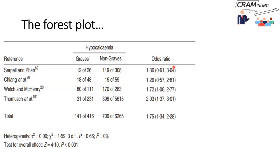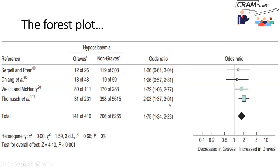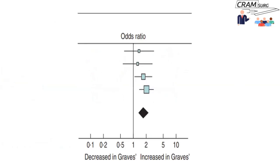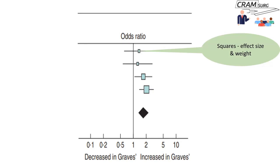You have the results for the primary outcome for each study in the different groups laid out side by side. In Graves patients you have the number with hypocalcemia; in the non-Graves cohort, the same. You list the results for the primary outcome in all four studies one below the other, then look at the effect size. In this case the effect size is described as the odds ratio, listed along with confidence intervals for all four studies.